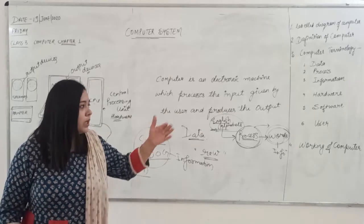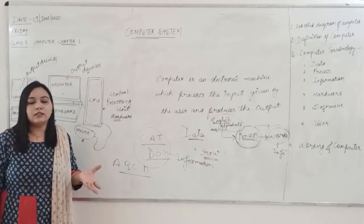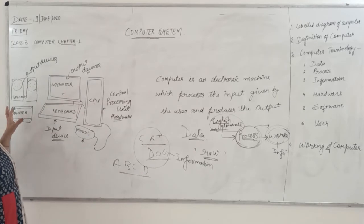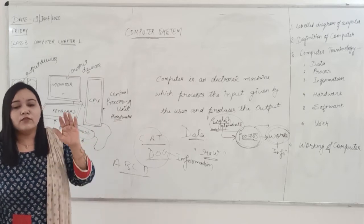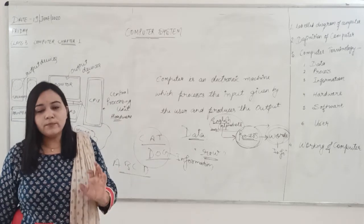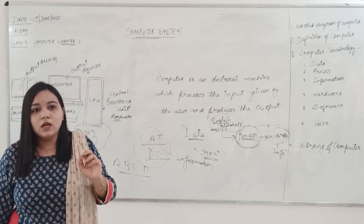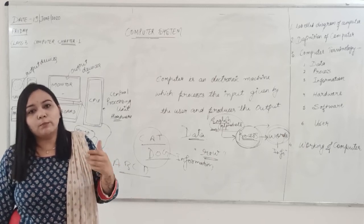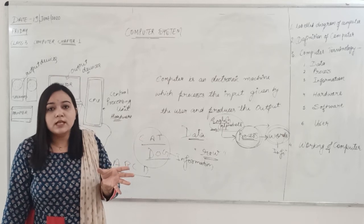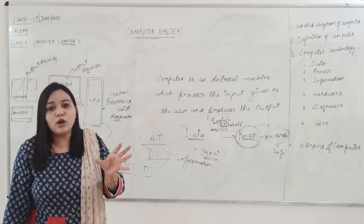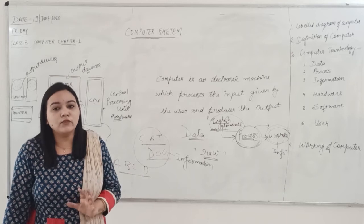Now let's discuss hardware and software. Hardware refers to the physical components associated with the computer — all physical devices like the CPU, mouse, keyboard, monitor, and speakers that you can touch. Software means a set of instructions; it is something you cannot touch. For example, Microsoft Paint, on which you do painting projects, is not hardware — it is software. Similarly, your operating system is also software. It is not something you can touch but it exists inside the computer. These are software components.